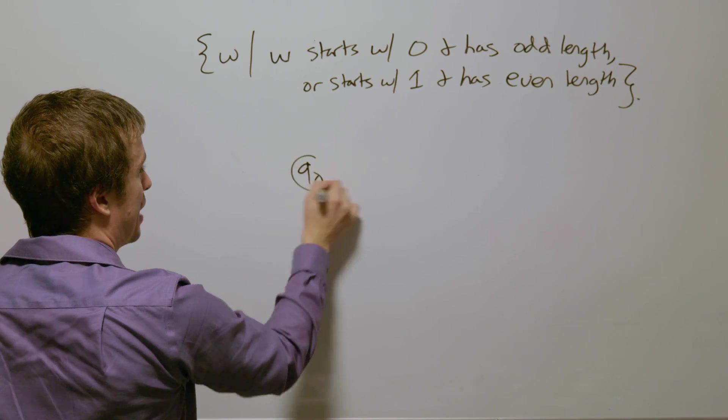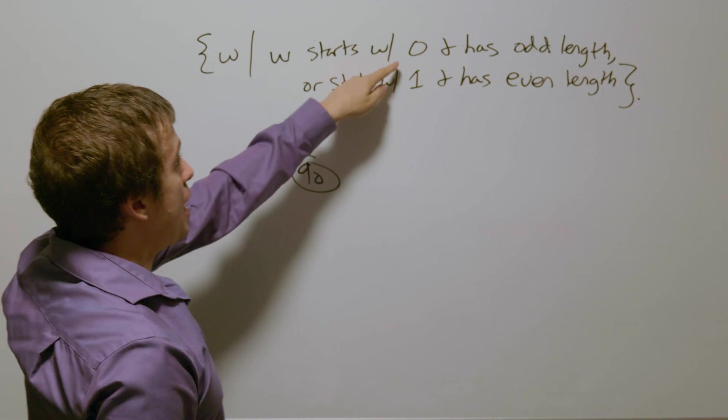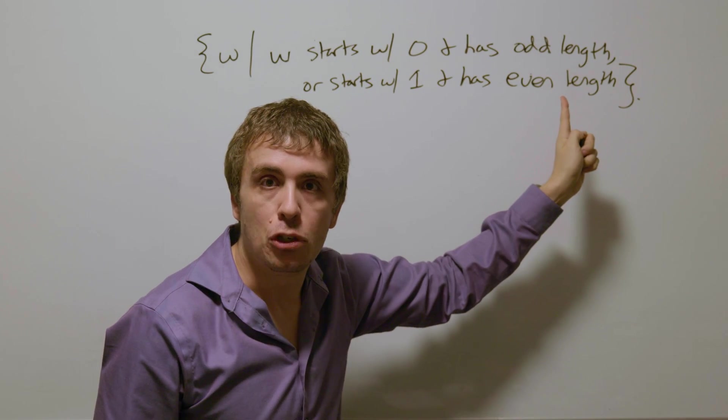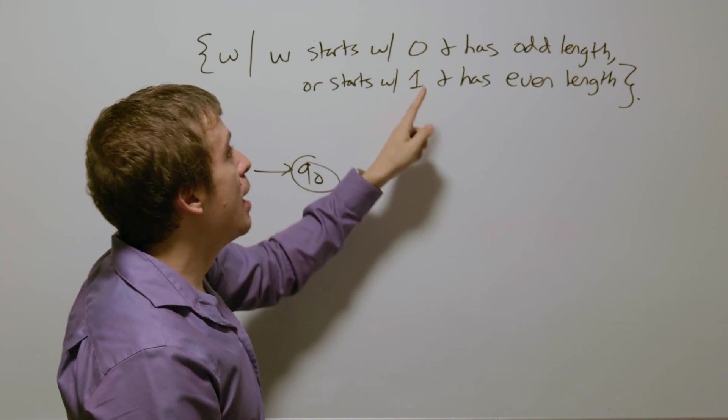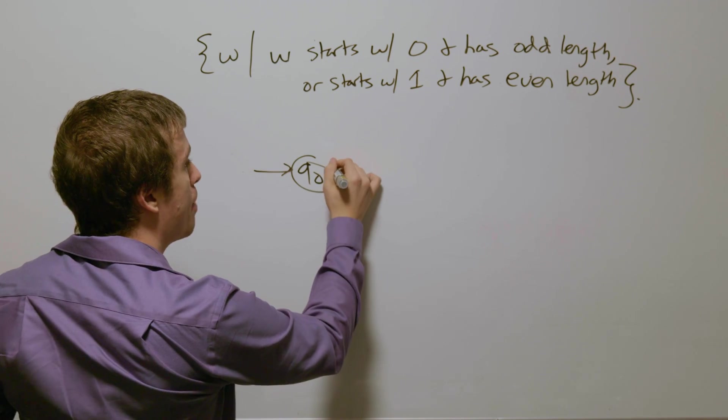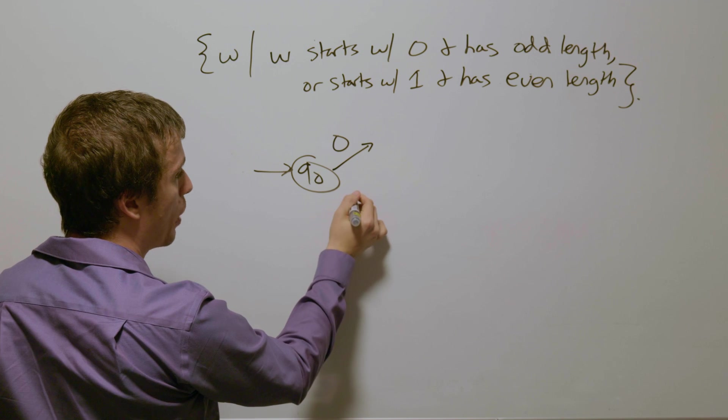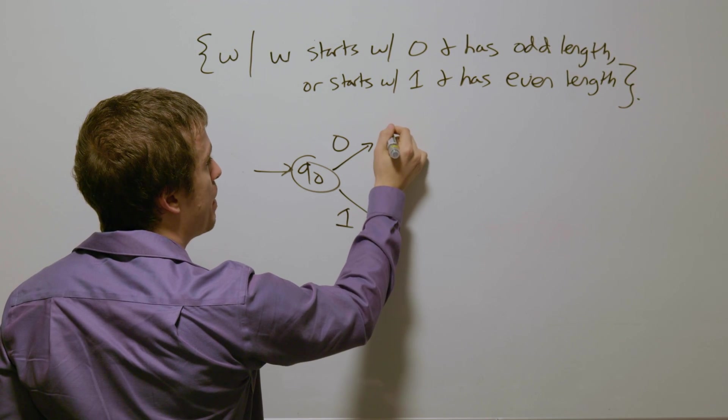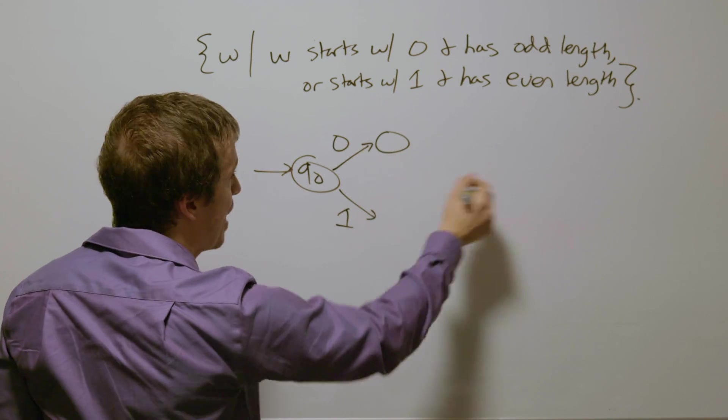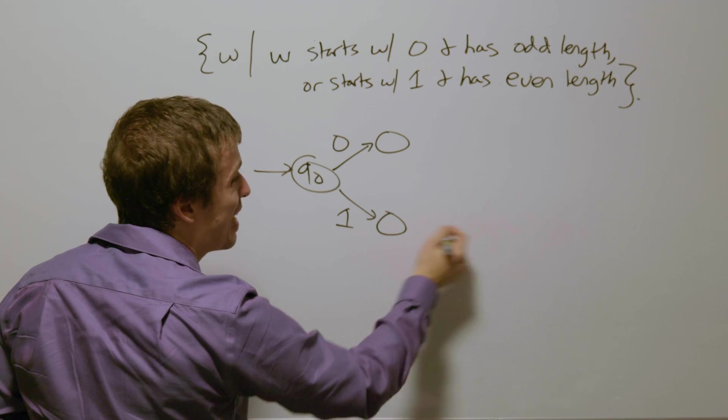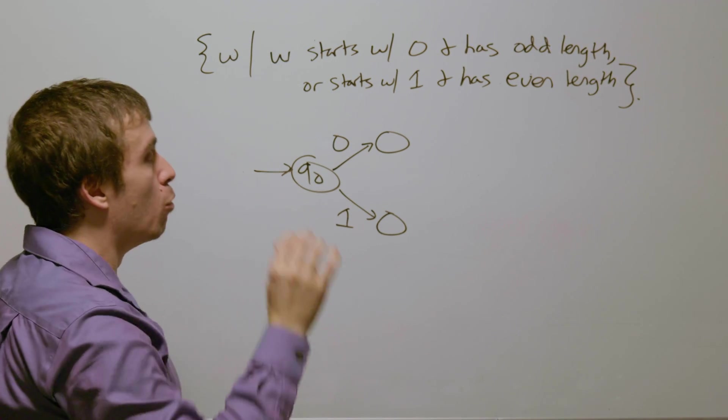So we always need a start state, clearly. So then if we have a starting with a 0, we're automatically going to stay in the first case, no matter what. And we're never going to go into the second case, and vice versa. So I'm going to draw this with a 0 going up, and a 1 going down. So this is going to be some DFA that involves odd lengthiness, and this one is going to be even lengthiness.